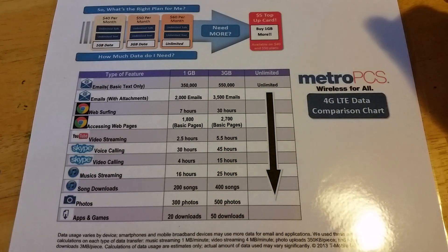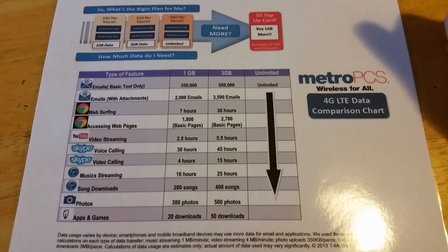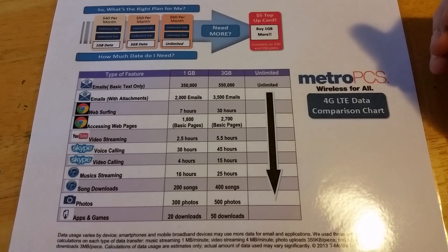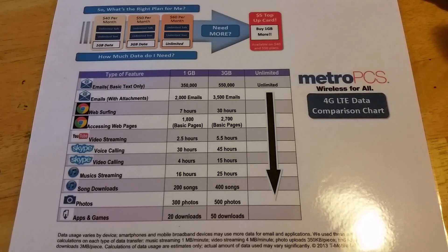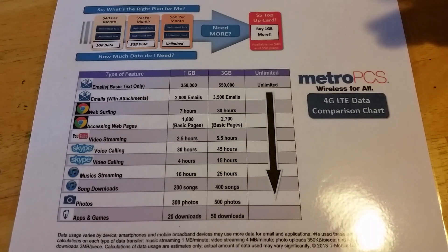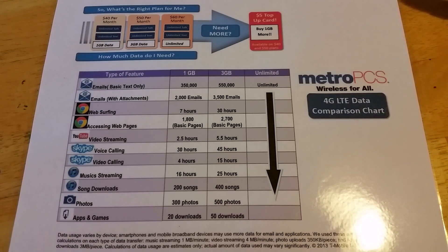Song downloads: 200. Photos: 300. Apps and games: 20. As you can see, you can eat that up pretty fast. Say you download 5 games, send 20 or 30 pics, download 50 songs, send a few thousand emails, and YouTube for half an hour — that's pretty much your 1GB.